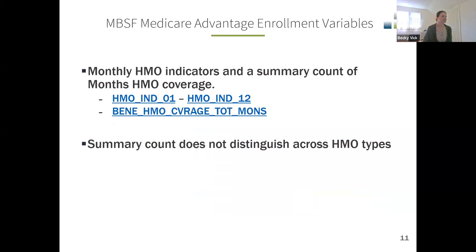Going back to these variables in the MBSF that indicate whether or not a person was enrolled in Medicare Advantage in a given month: there are 12 of these variables, one for each month, called HMO_IND with the month number on the end. Aside from the monthly indicators, there's also a summary variable that contains the total number of months a member was enrolled in Medicare Advantage. The summary count variable does not distinguish across HMO types, so if they did switch from one Medicare Advantage plan to another in the year — although it's rare — the total months will just be the total months enrolled in any Medicare Advantage plan.